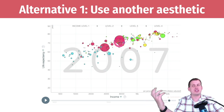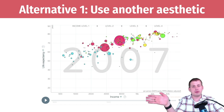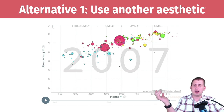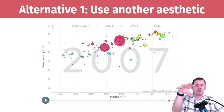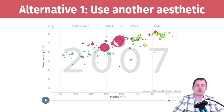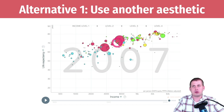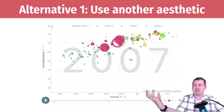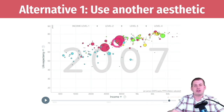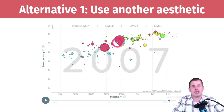In the animated version of the Gapminder plot, time is encoded as animation — you can watch things move. You can get all sorts of data into this graphic without resorting to dual y-axis.